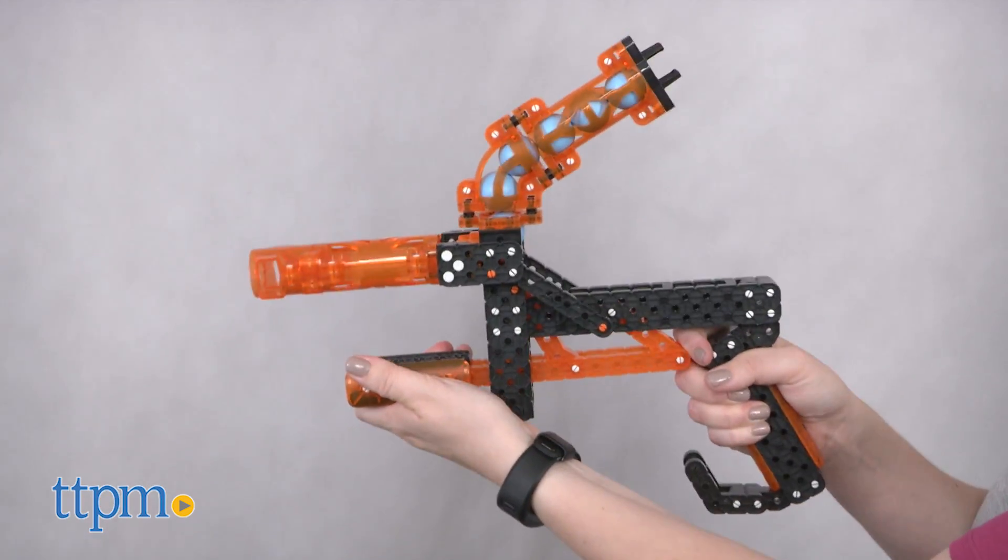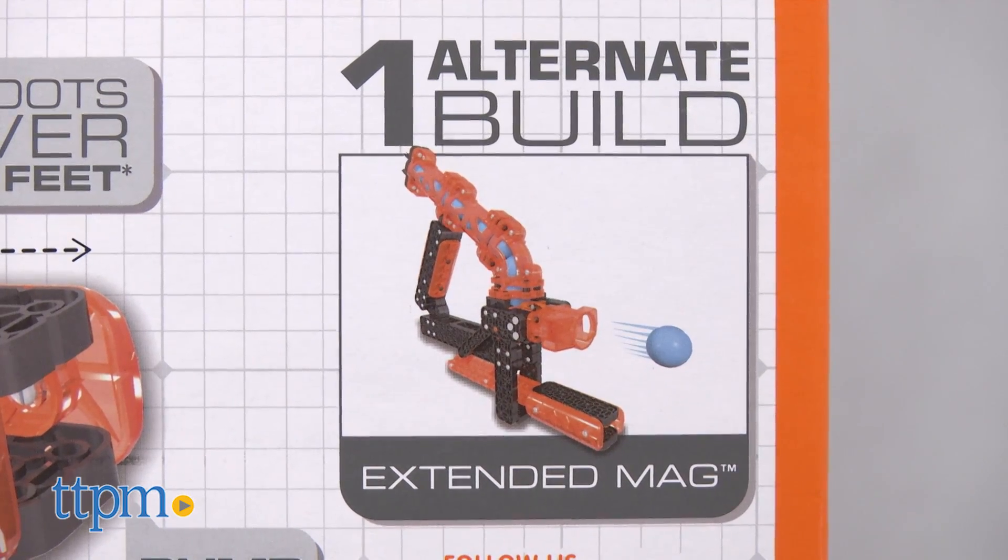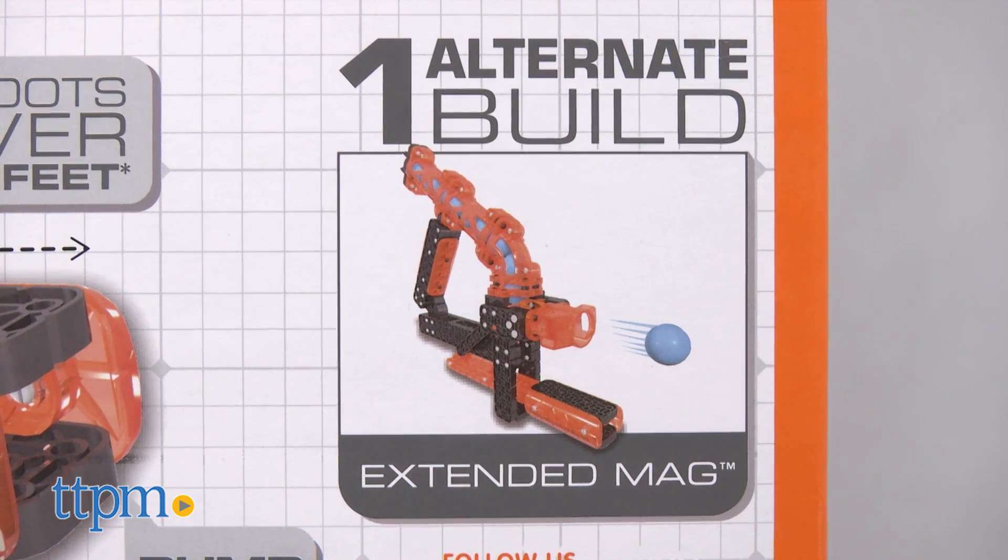Then just pull back on the arm and push forward to fire. There's also an alternate build to this model if you want a ball shooter with an extended mag. Instructions are on the Hexbug website.